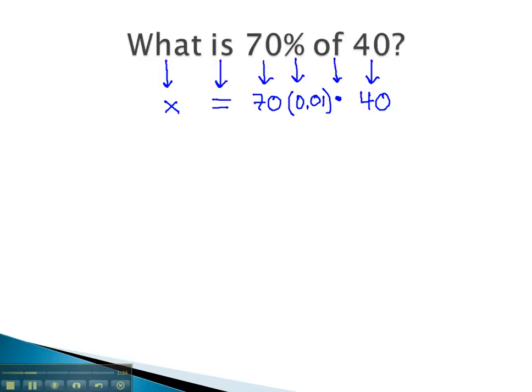Let's see if we can solve this. With solving, the first step is to do any simplifying that can be done on the left and right side. On the left side, we just have x. On the right side, we have a big multiplication problem. This is easily done on our calculators, 70 times 0.01 times 40, and we find out x is equal to 28.